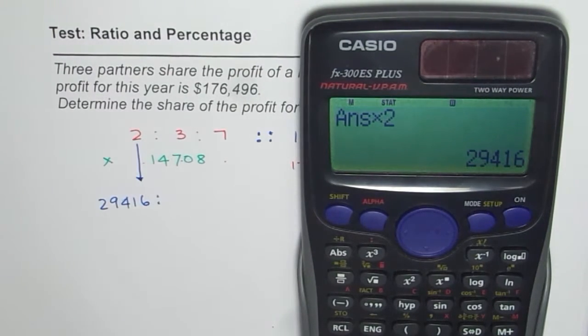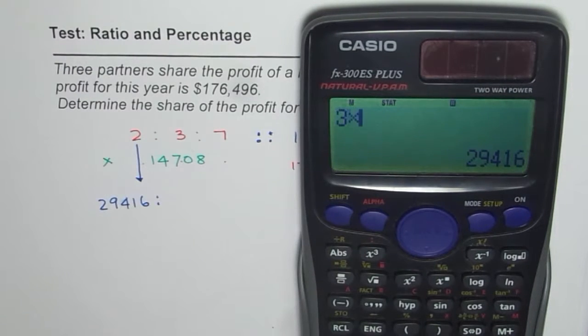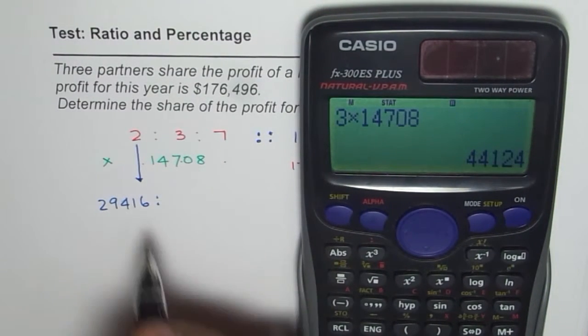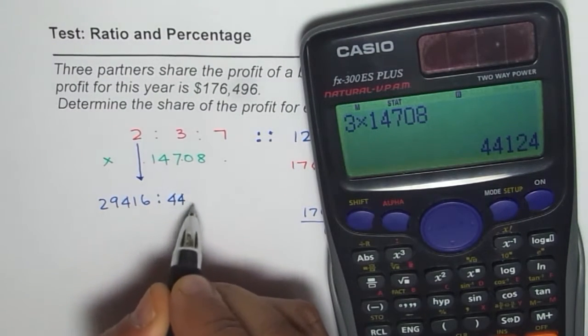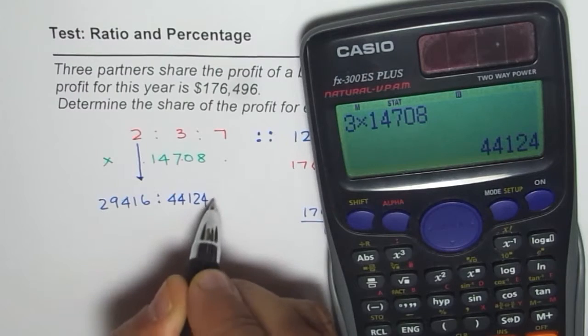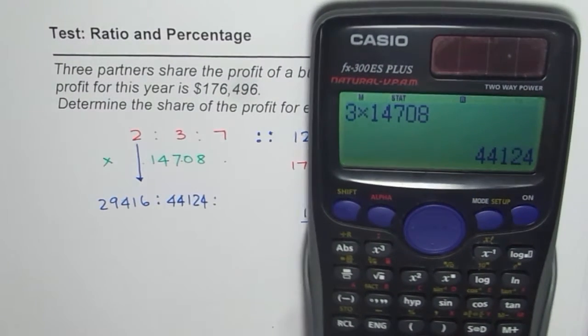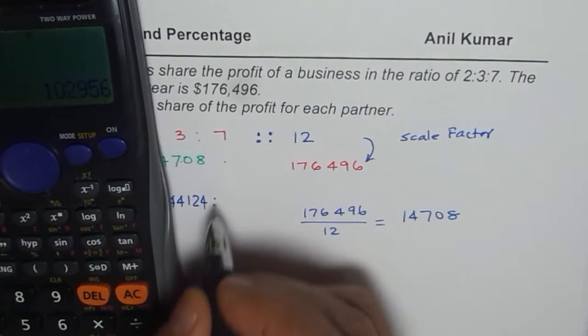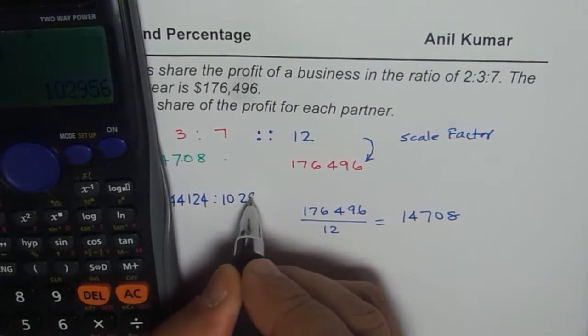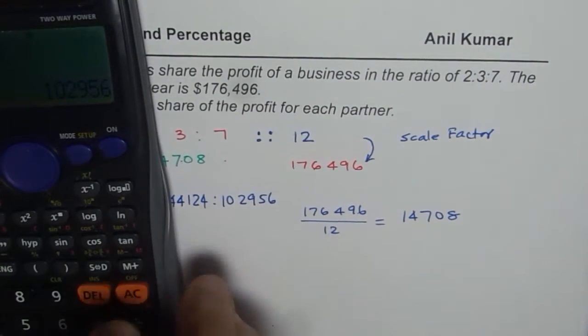The other person will be 3 times. So, 3 times 14708, and that is 44,124. And the third person gets 7 times. So, it is 7 times 14708. And that equals to 102,956.